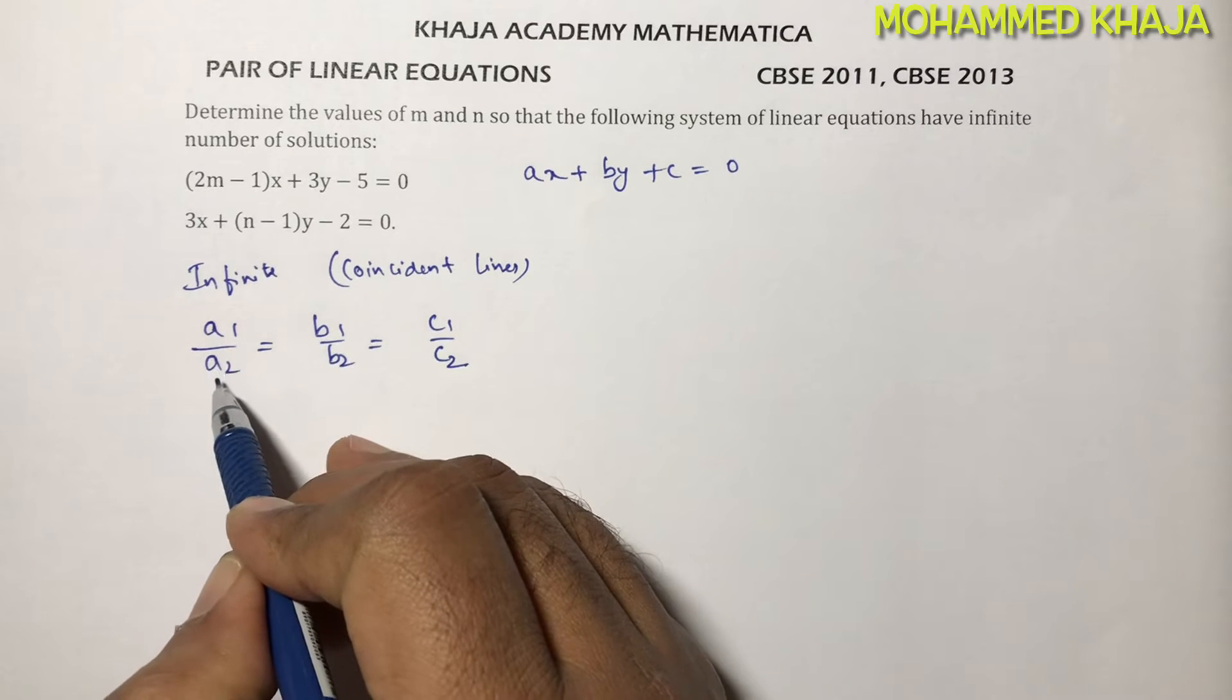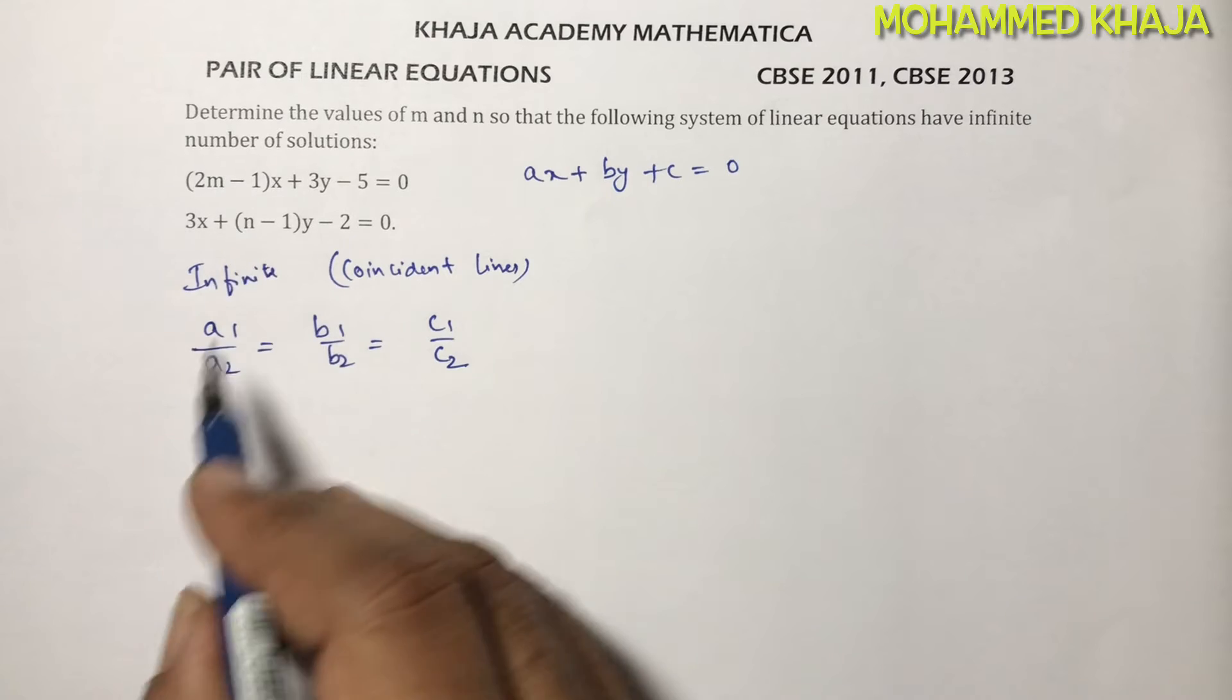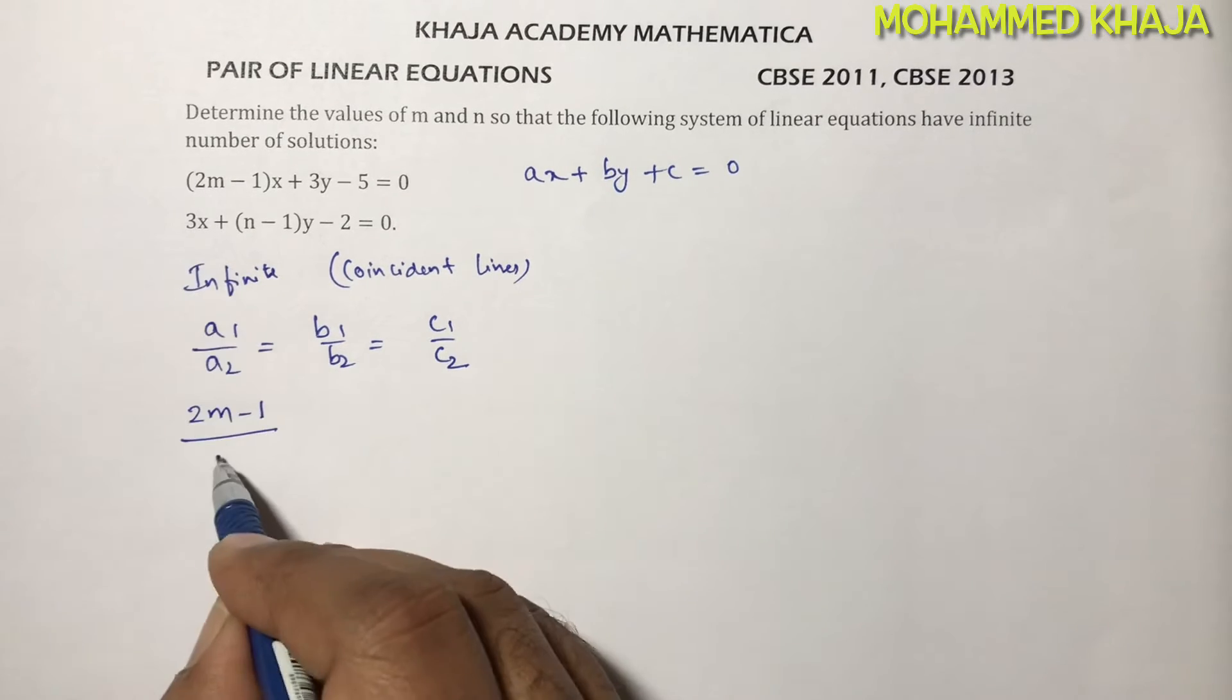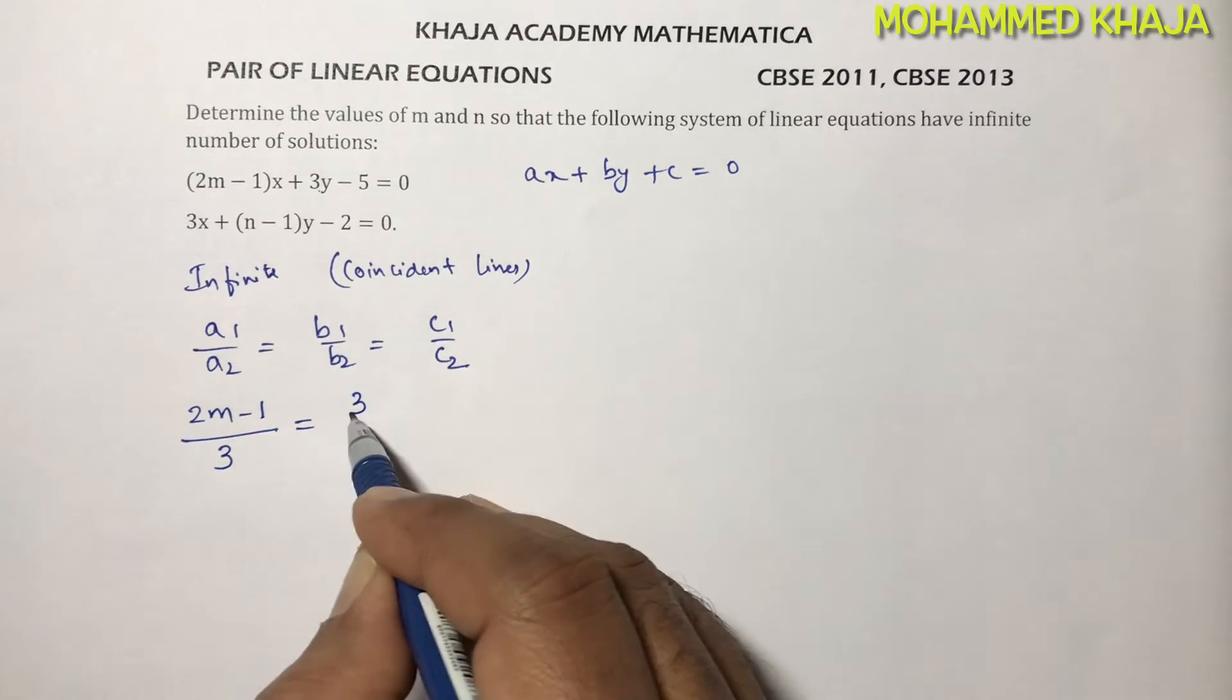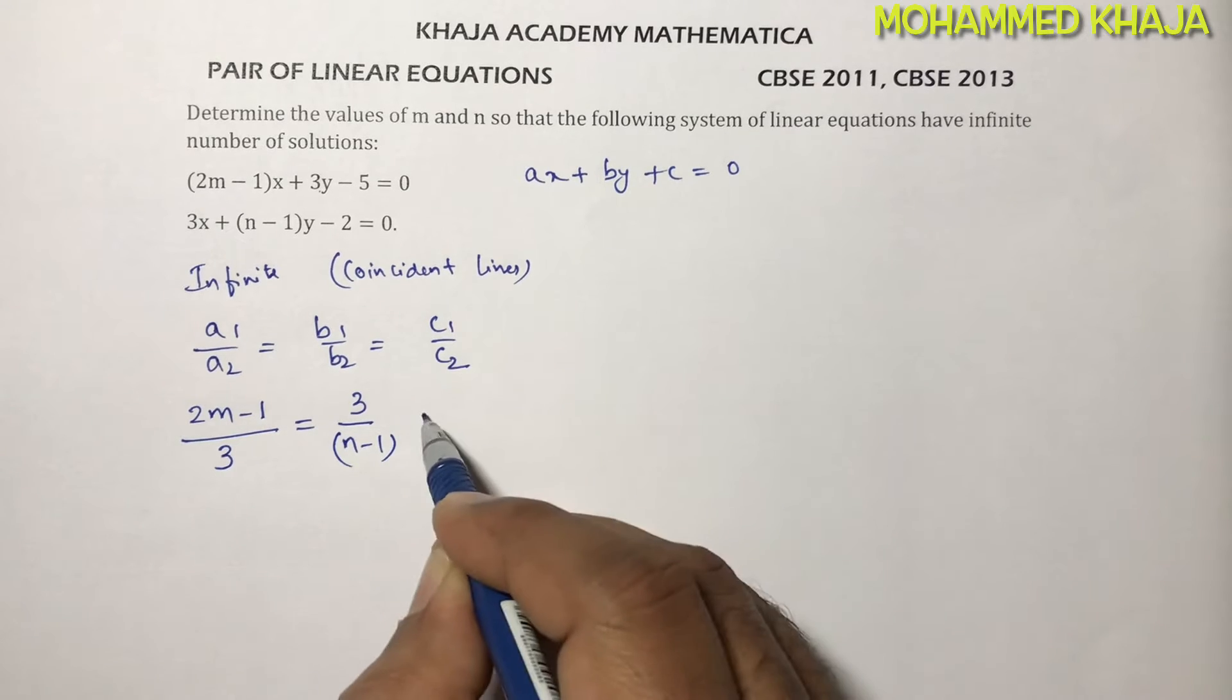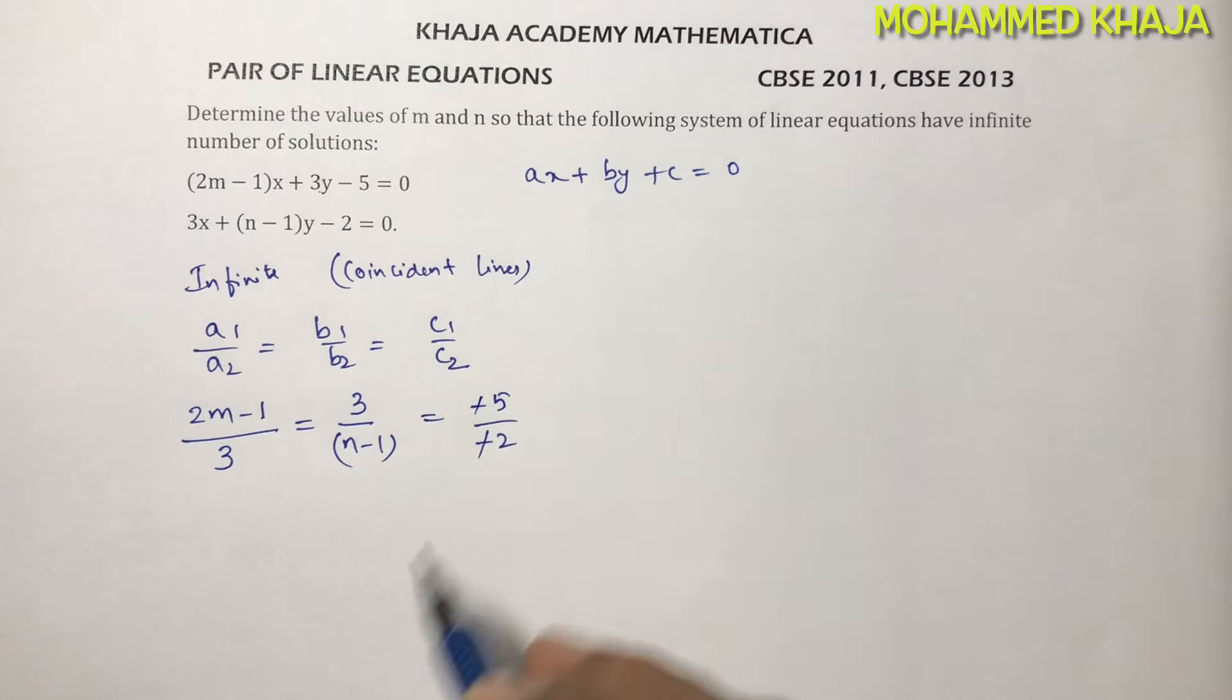Now a1 is coefficient of x, a2 is also coefficient of x of the second equation. Substituting, a1 value is 2m minus 1 by a2 value is 3, that equals b1 is 3, b2 is n minus 1, and that equals minus 5 by minus 2. The minus signs cancel.